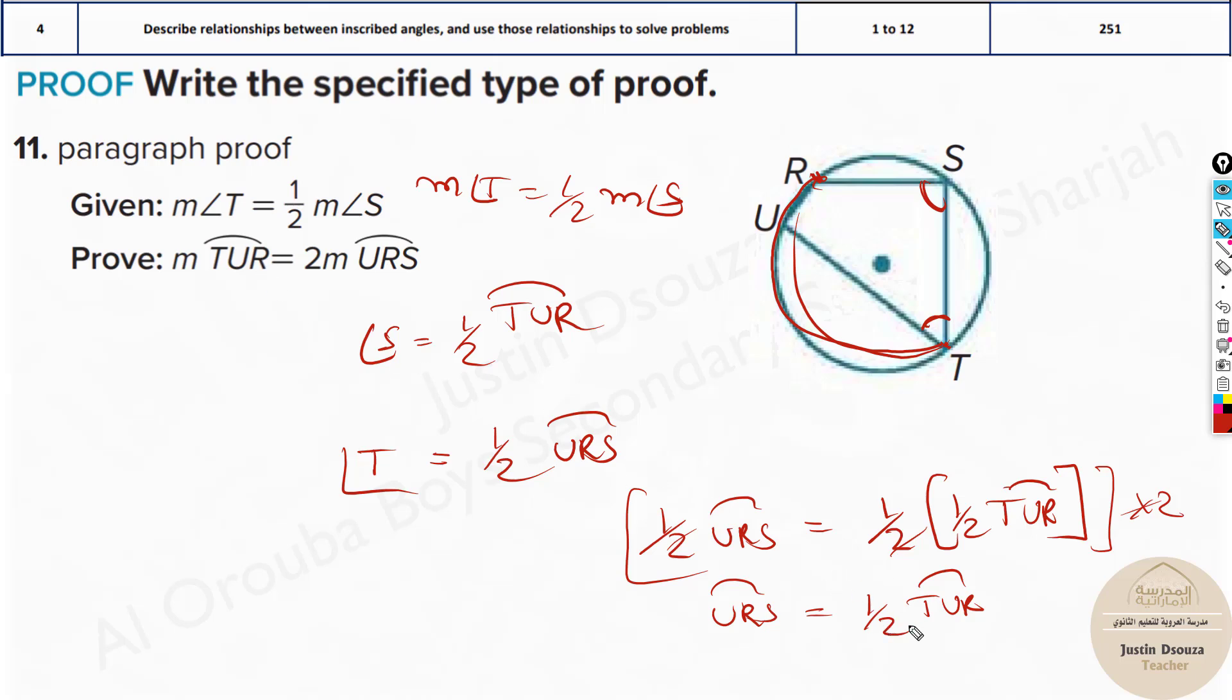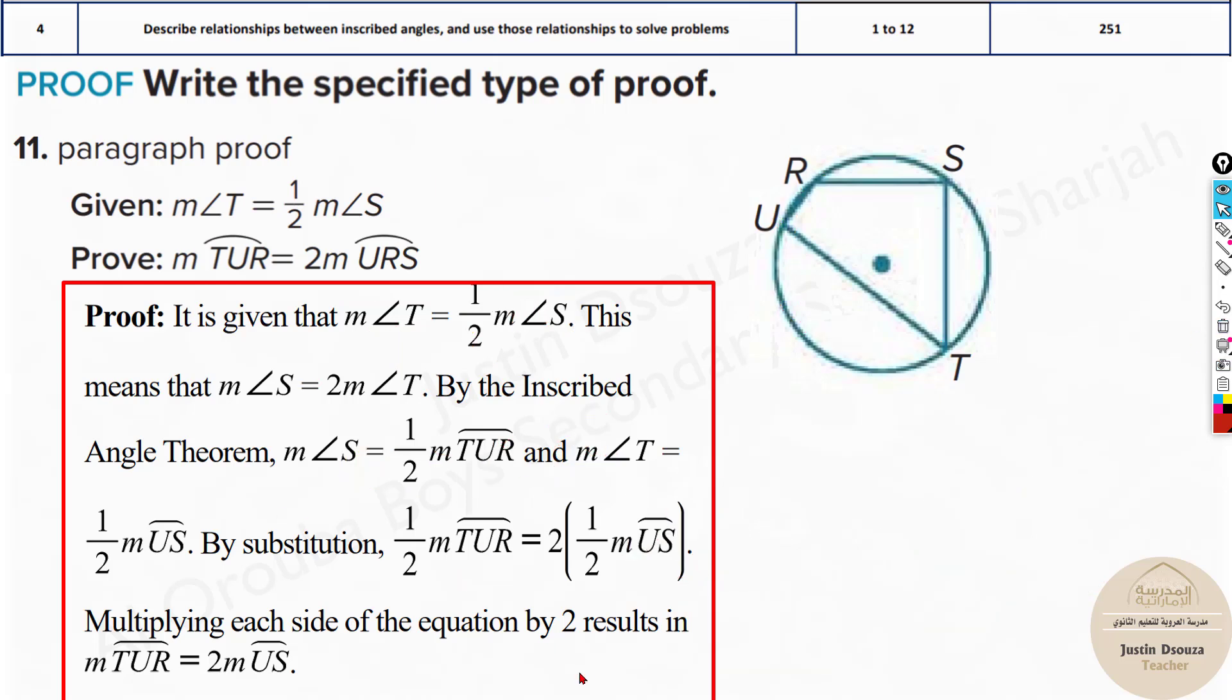Now over here they have asked you for value of TUR. So multiply again by 2. You will have 2 URS equals TUR. The measure of arc TUR is equal to 2 times measure of URS. This is the proof. Very simple proof. You need to know the inscribed angle formula for these angles, S and T. Substitute them in the given and then simplify it.